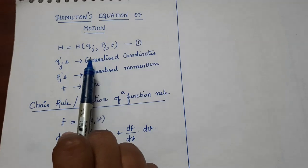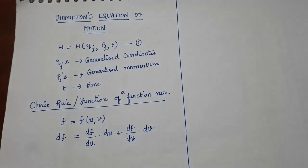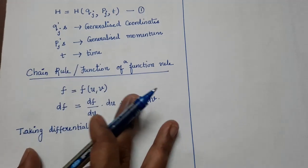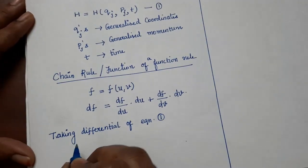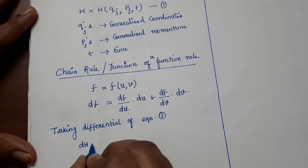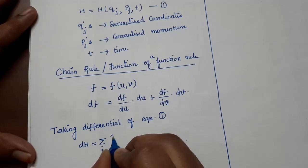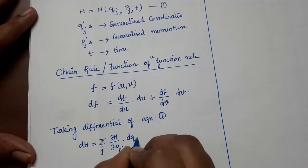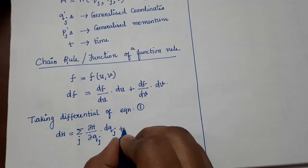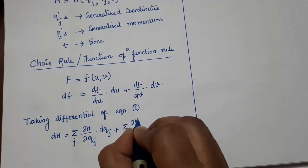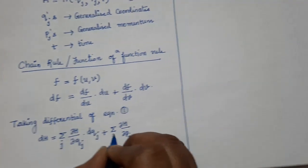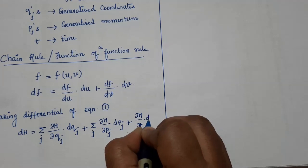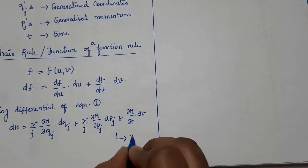Using this chain rule, let us differentiate equation 1. Taking the differential of H, we get: dH = Σⱼ (∂H/∂qj) dqj + Σⱼ (∂H/∂pj) dpj + (∂H/∂t) dt. Let us call this equation number 2.